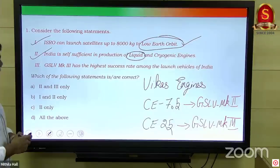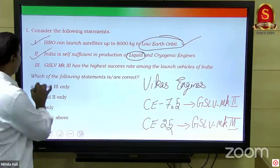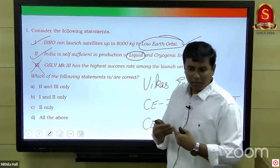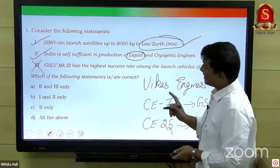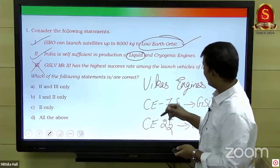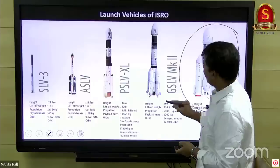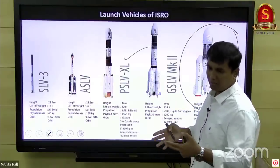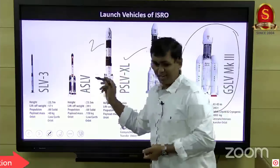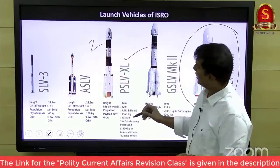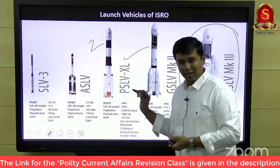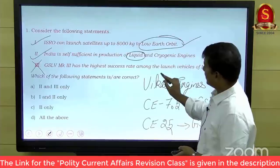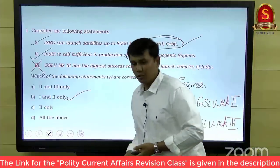Third statement: GSLV Mark 3 has the highest success rate among all launch vehicles of India — this is wrong. When we talk about success rate, it's about how many missions were sent and how many were successful. GSLV Mark 3 has a lesser success rate. PSLV, the Polar Satellite Launch Vehicle, is considered the most reliable launch vehicle of India — in its entire service history there have been only two failures, one in 1993 and the other in 2017. So the third statement is wrong. Answer: one and two only.